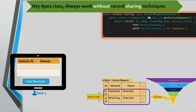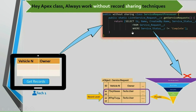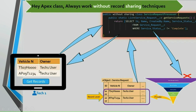Now we have tagged our class with the without sharing keyword. Whenever tech1 user accesses the records by invoking the get records method, the SOQL query inside this class runs without respecting the record sharing techniques configured for this user. Hence two records will be returned and displayed to the user — even though tech1 user has access to only one record, since the class is tagged as without sharing, it returns two records.